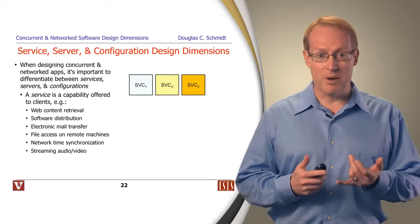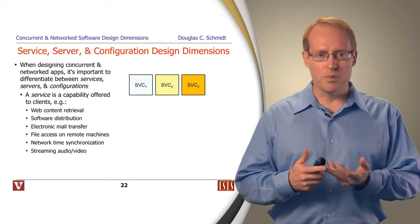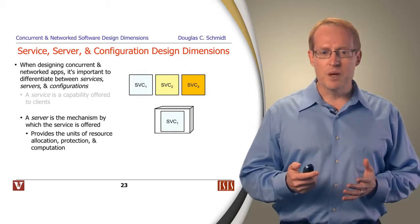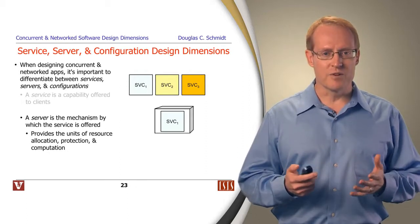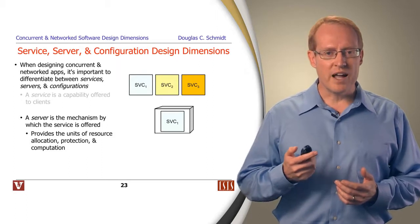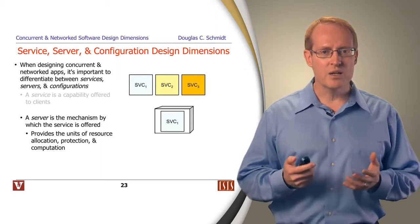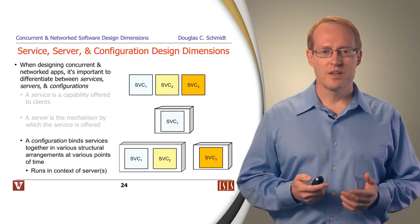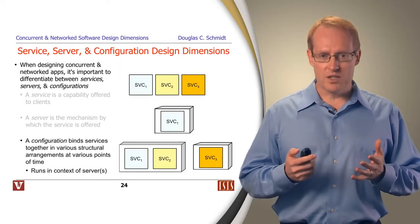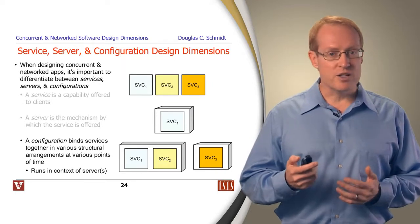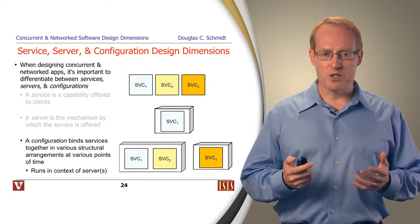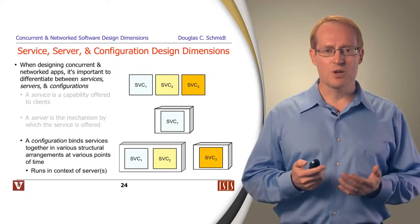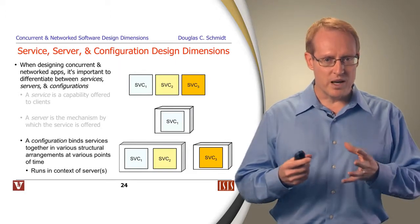These services could be implemented by functions, objects, components, or web services. A server is the mechanism by which the service is offered and delivered to the client. It provides the units of resource allocation, protection, and computation to carry out the work. A configuration binds services together in various structural arrangements at various points in time, and these services run in the context of servers in the configurations they've been assembled into.